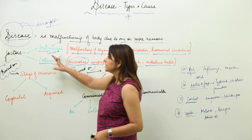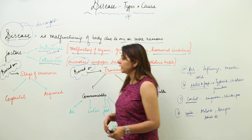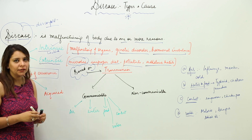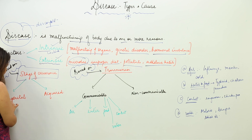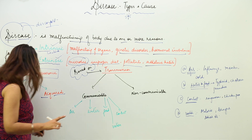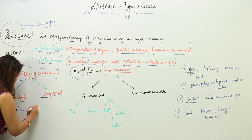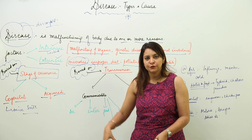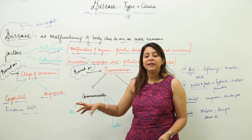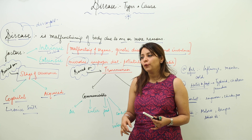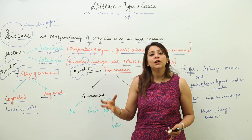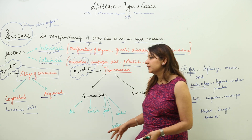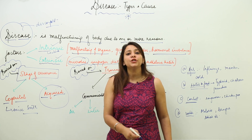Another classification is based on the stage of life at which the disease occurs: congenital and acquired. Congenital disease is one which is present in a person since birth. It is mainly caused by genetic disorders. Examples include thalassemia, leukemia, sickle cell anemia, and hemophilia — all congenital defects present in the body from birth.